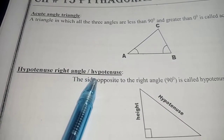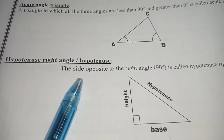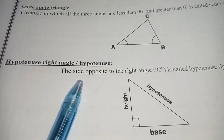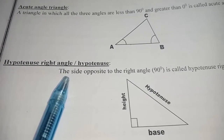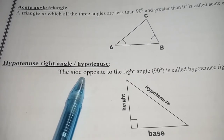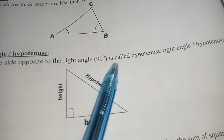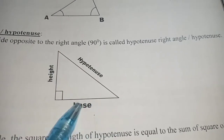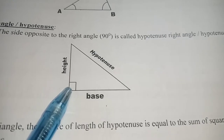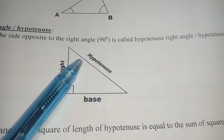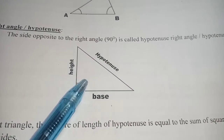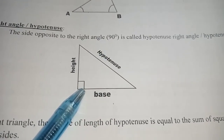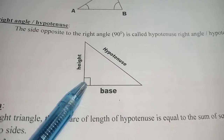Next, what is the hypotenuse of a right triangle? Keep in mind that hypotenuse is associated only with a right triangle — a triangle having one angle of 90 degrees. The side opposite to the right angle is called the hypotenuse of a right triangle. In other words, the side which is facing or opposite to the right angle of 90 degrees is called the hypotenuse.